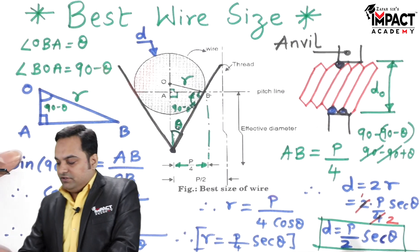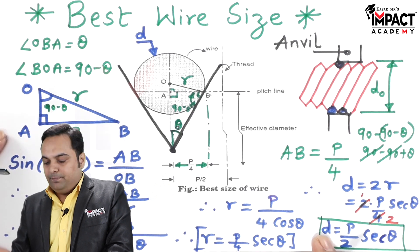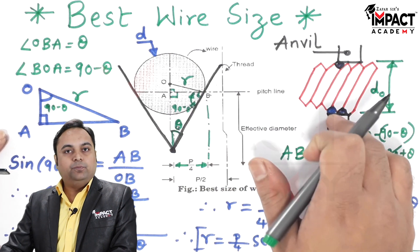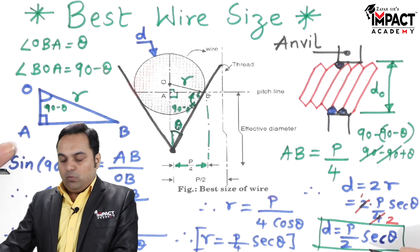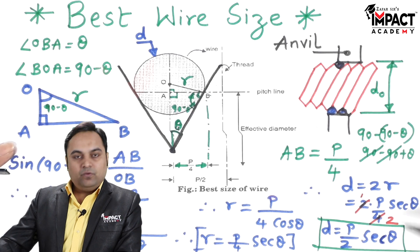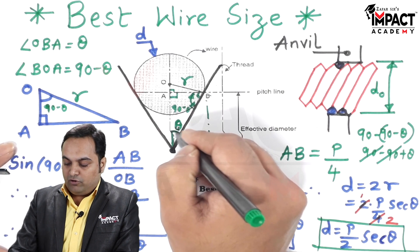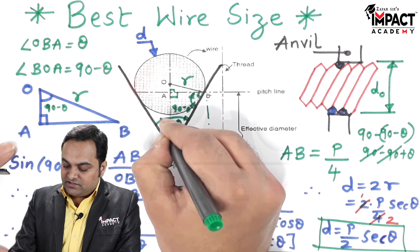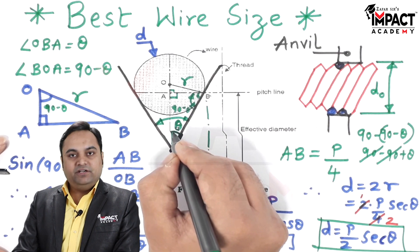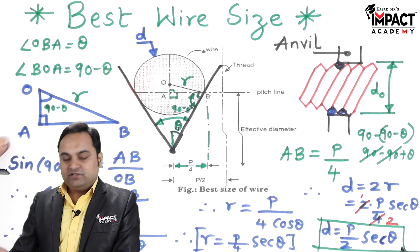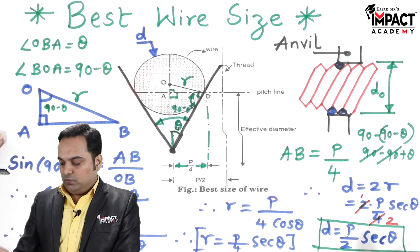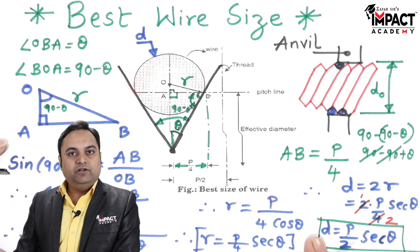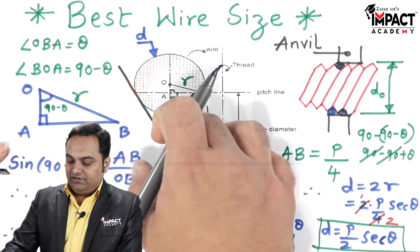So this diameter d indicates the best wire size which we are going to place in the V groove. Now once we know theta, which is the half or the semi-flank angle, because the complete angle is known as the flank angle, so half of that is theta. So theta would be known to us, pitch would be known to us. Once these values are known, we can find the value of best wire size and place it in the V groove to get the diameter.